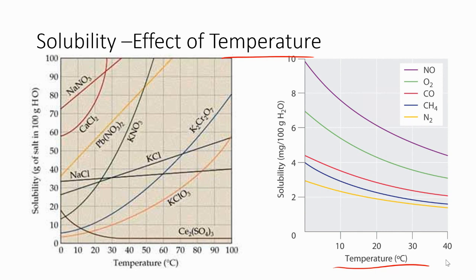On the other hand, if I look at solids on the left side of this slide, same kind of graph, temperature on the x-axis, solubility on the y-axis, I've got a lot of things graphed here. They're all ionic compounds. And what we're seeing is, for the most part, the solubility of solids tends to increase with temperature.